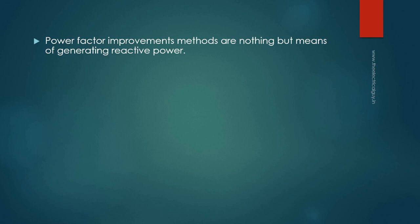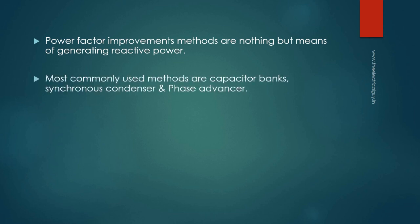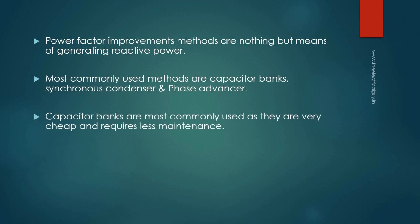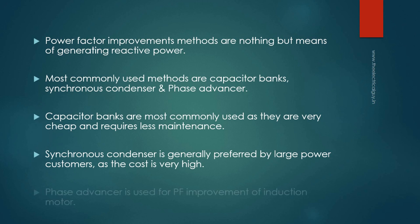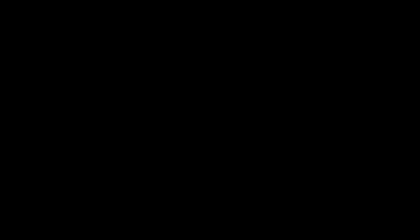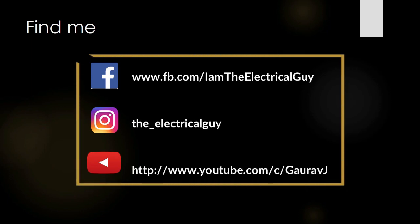To summarize: power factor improvement methods are nothing but the means of generating reactive power. The three most commonly used methods are capacitor banks, synchronous condensers, and phase advancers. Capacitor banks are most commonly used as they are cheap and require less maintenance. Synchronous condensers are generally preferred by large power customers due to their high cost. Phase advancers are used for power factor improvement of induction motors.